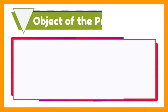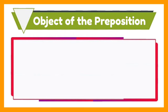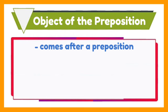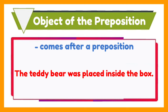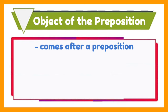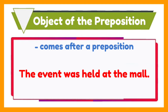Now let us have the object of the preposition. An object of the preposition is a noun or pronoun that follows a preposition in a sentence, that is why it is called the object of the preposition. For example, the teddy bear was placed inside the box. The preposition is inside, and the noun that comes after it is box, so box is the object of the preposition. Another example: the event was held at the mall. The preposition is at, so the object of the preposition in the sentence is mall.